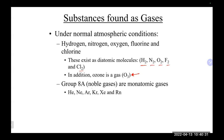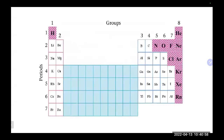We also have noble gases, which are Group 18 on the periodic table — neon, argon, krypton, and so on. Those are monoatomic gases; they come as individual atoms, as opposed to things like chlorine, nitrogen, and oxygen which come as diatomic molecules. When we look at the periodic table, there's a section where things under normal conditions come as gases, which is pretty much hydrogen and everything on the right side.